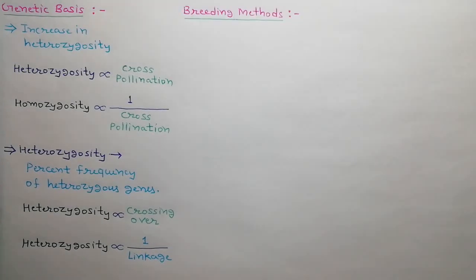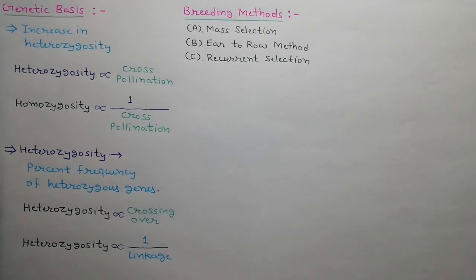Now we will discuss about the breeding methods in cross-pollinated crops. We can use three methods: mass selection, ear-to-row method, and recurrent selection.